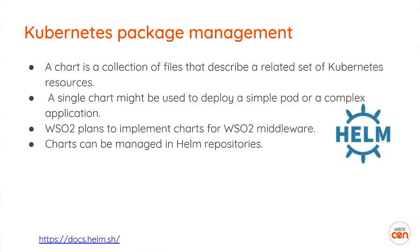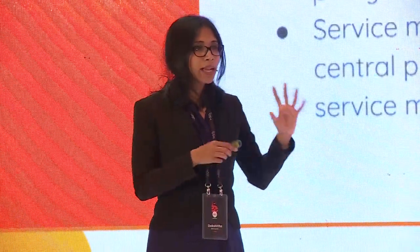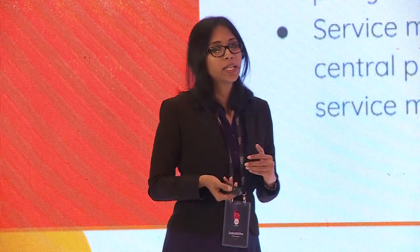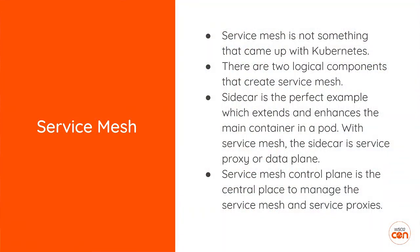A Helm chart is a collection of files that describe a related set of Kubernetes resources. A single chart can be used to deploy a simple pod or a complex application. We have plans to implement WSO2 middleware using Helm charts — it's already underway. Charts can be managed in Helm repositories.